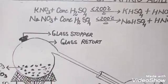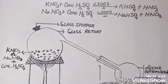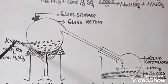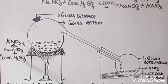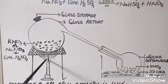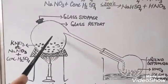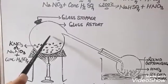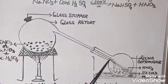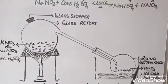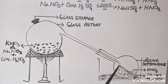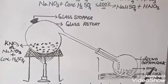This is the experimental setup for the laboratory preparation of nitric acid. In a glass retort, we take solid potassium nitrate or sodium nitrate along with concentrated sulfuric acid, and this mixture is heated below 200 degrees Celsius when we get nitric acid in the form of vapors. These nitric acid vapors are collected in a round bottom flask which is surrounded by an ice-cold mixture. The ice-cold mixture condenses vapors of nitric acid to give liquid nitric acid.